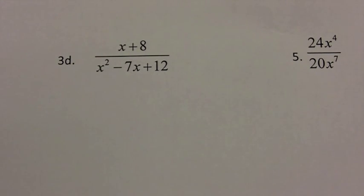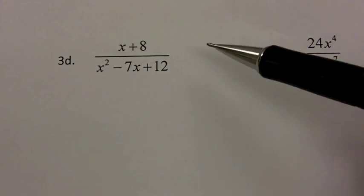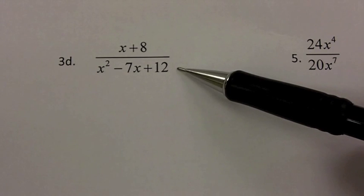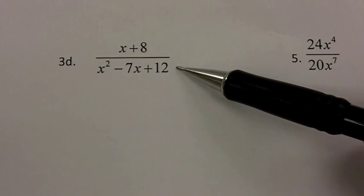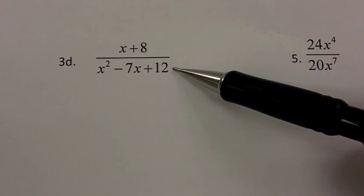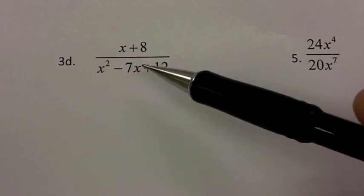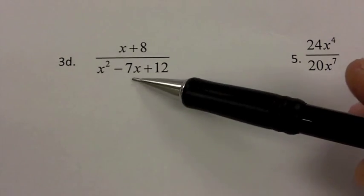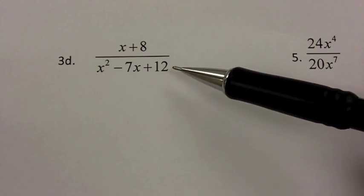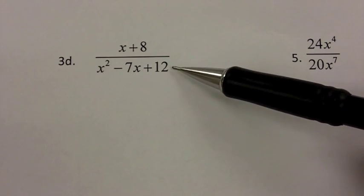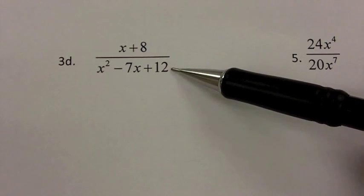This video will help you with the different problem types that appear on your Unit 7 test review. The first question we're going to take a look at is 3D, where we're asked to find which values to exclude so that we don't get zero in the denominator. One way to do this is just guess and check — randomly plug in numbers for x until you figure out when the bottom expression equals zero. The easier way is to just factor this.